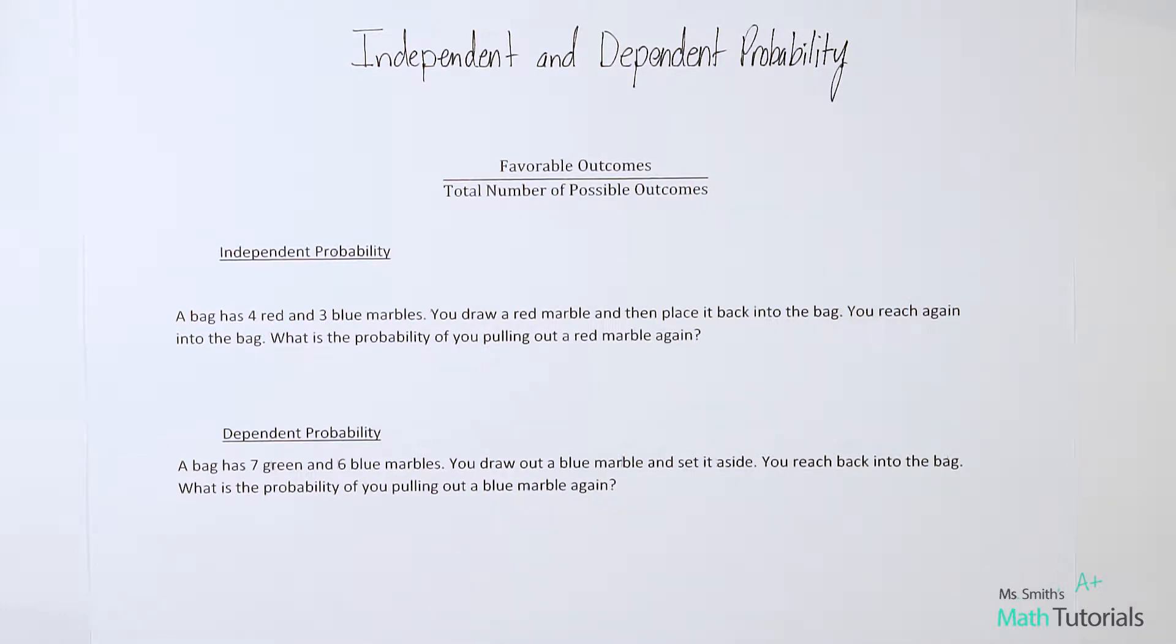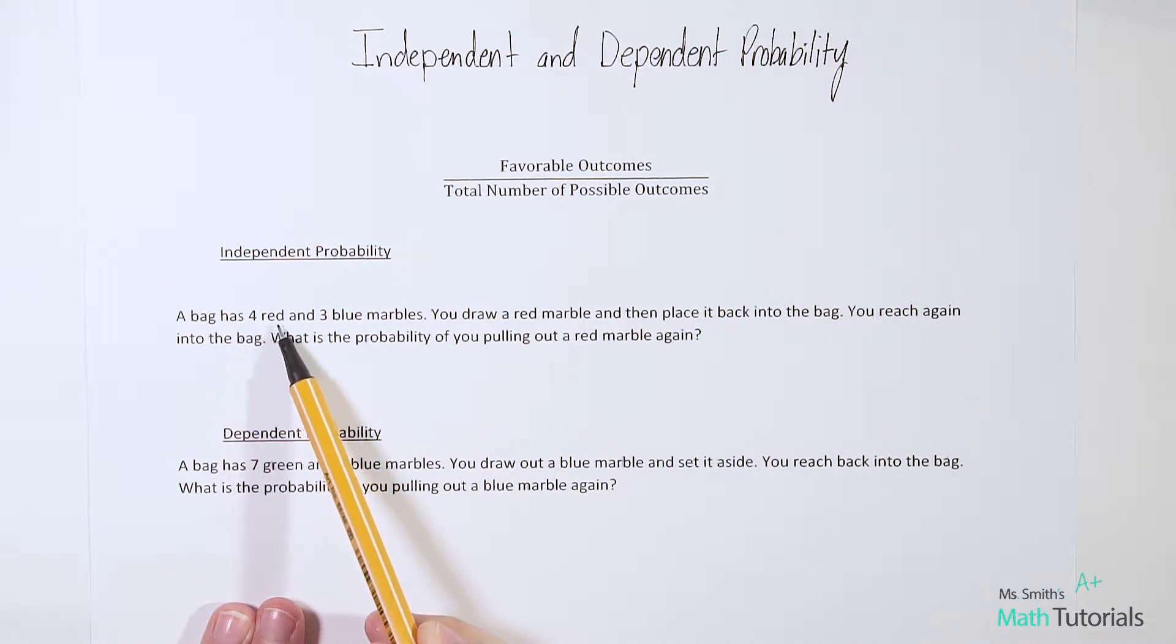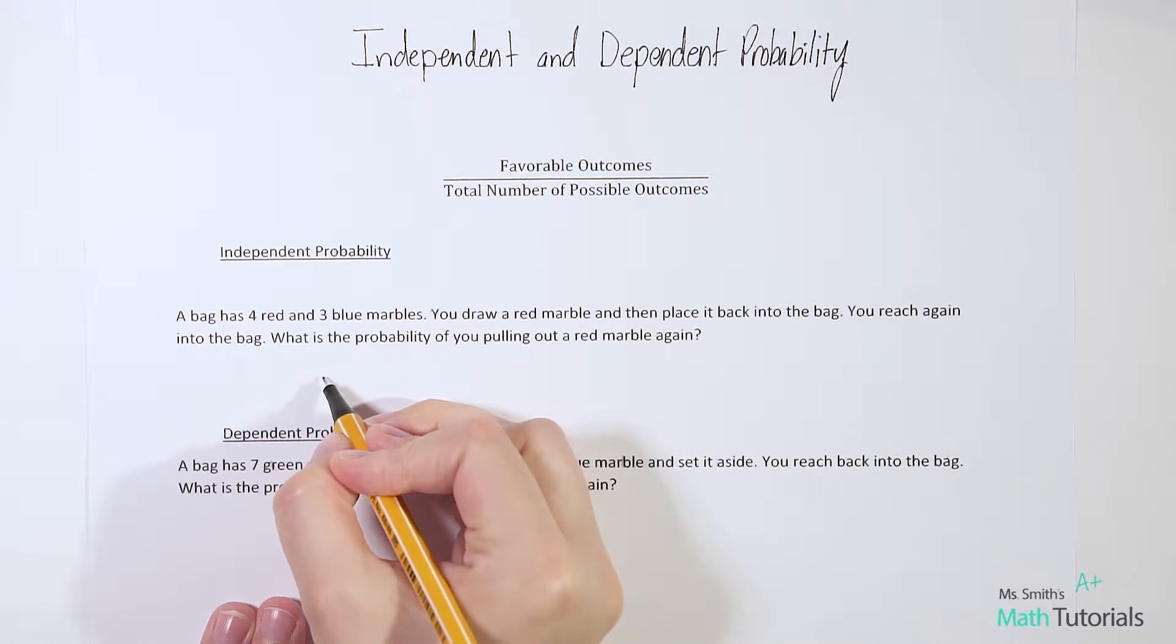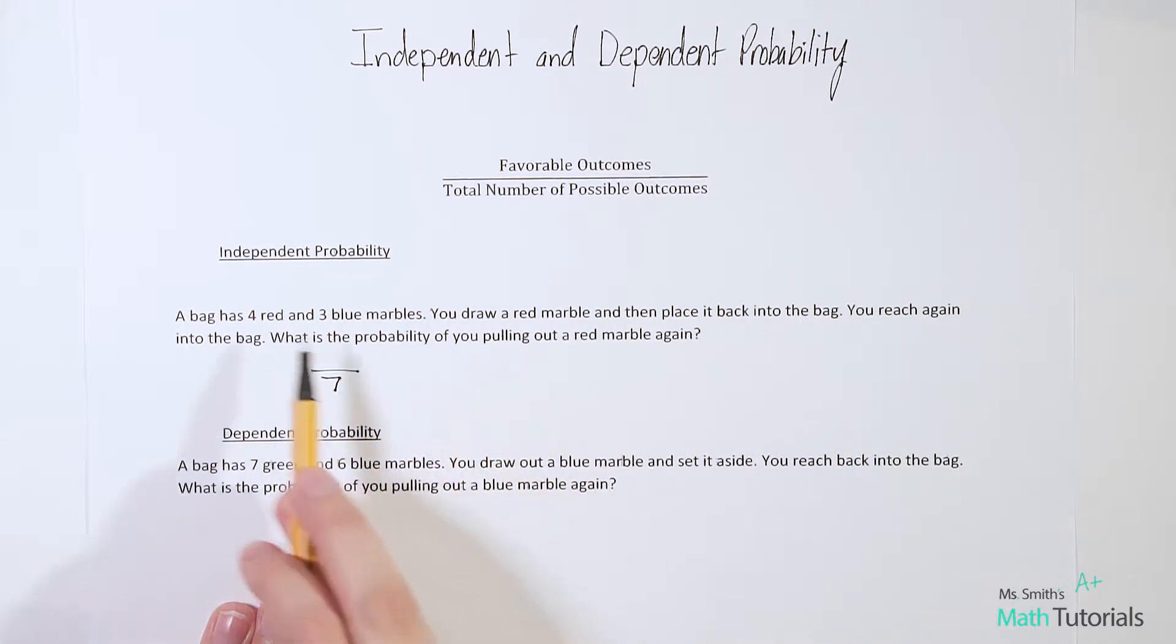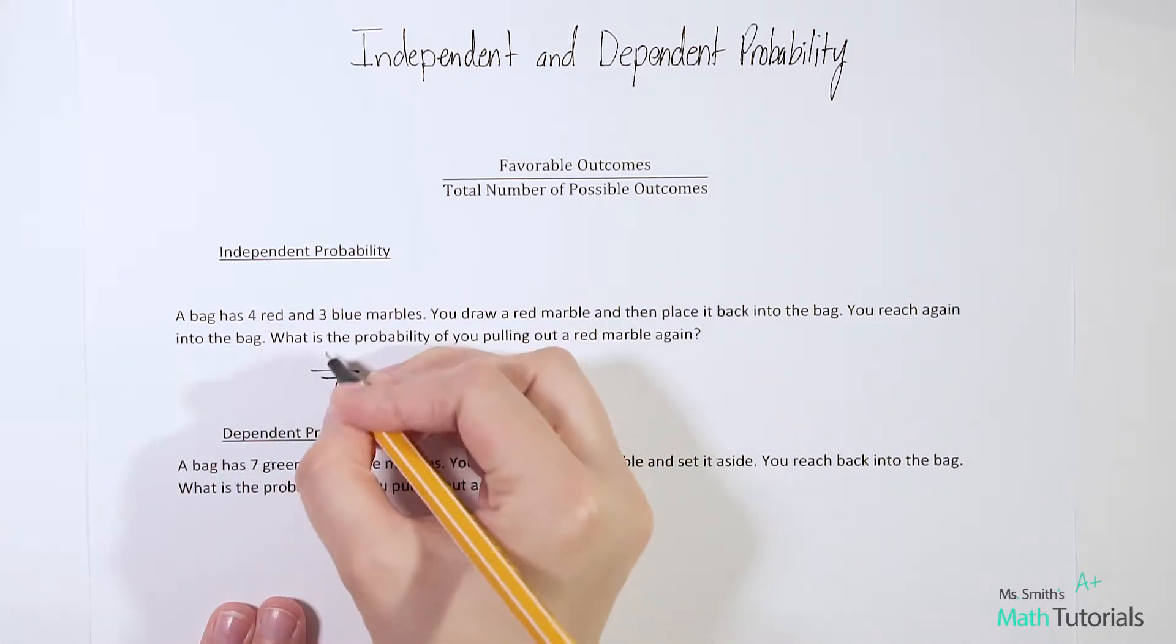You have your total number of outcomes. There are four opportunities for red and three opportunities for blue. So we would say, okay, well, four plus three is seven, right? So seven is our total number of possible outcomes. Our favorable outcomes - well, we're wanting to pull out a red one. What is the probability of you pulling out a red marble again? Well, how many red marbles total are in the bag? There are four.